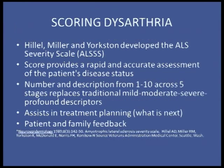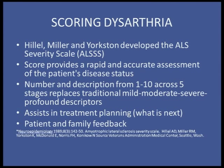For scoring, we use the ALS severity score created by the Hillel Group out of the University of Washington — similar to the ALS FRS. Created in 1989, it provides a rapid and accurate assessment of disease status. Scores go from 1 to 10 across five different stages, replacing traditional mild, moderate, severe, or profound descriptors, which can lose inter-rater reliability. It assists in treatment planning and allows for patient and family feedback.